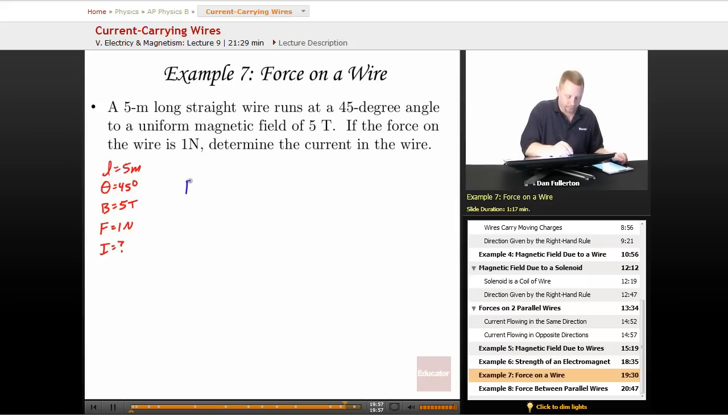All right. The force on the wire, F_B, is equal to I L B sine theta. We're looking for current, therefore current is going to be the force over L B sine theta,